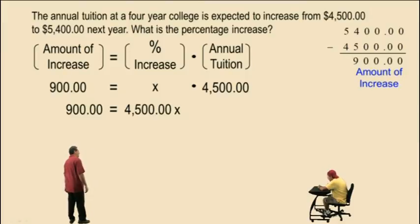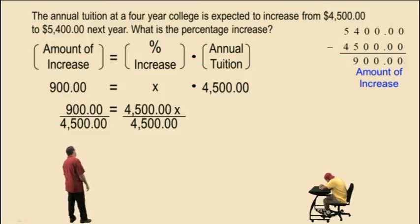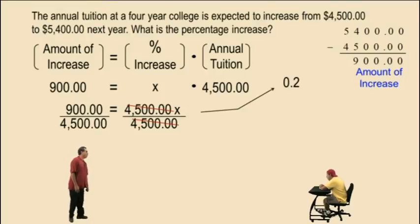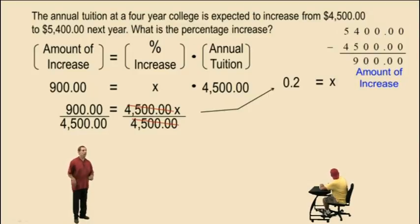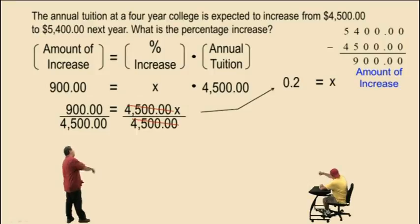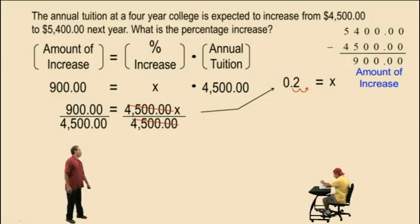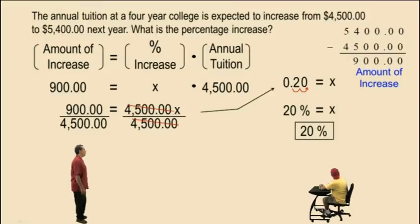To solve for x, we divide both sides by $4,500. Charlie, what's $900 divided by $4,500? 0.2 — very nice, Charlie. It's two-tenths, 0.2. And that's our x. Now remember, x represents the percent increase, so we have to report a percentage. We have a decimal, and to convert a decimal to a percent, we move the decimal to the right two places. Doing that, we get a percentage of 20%. So the percent increase is 20%.